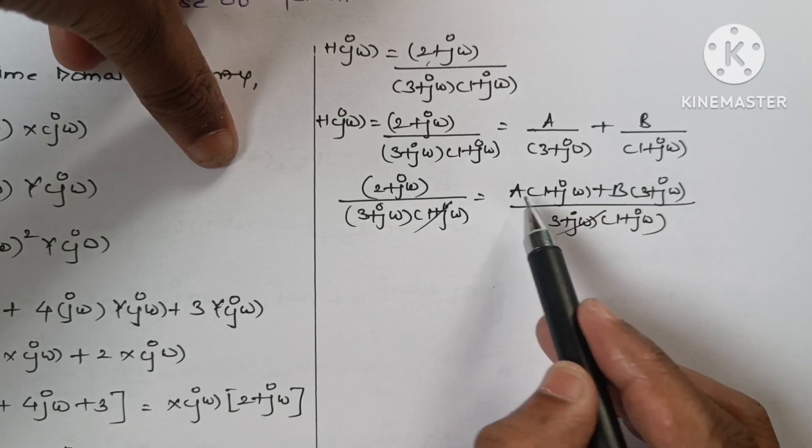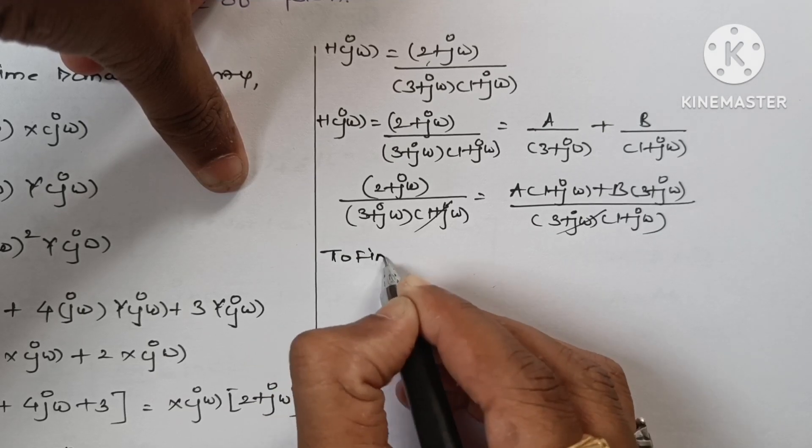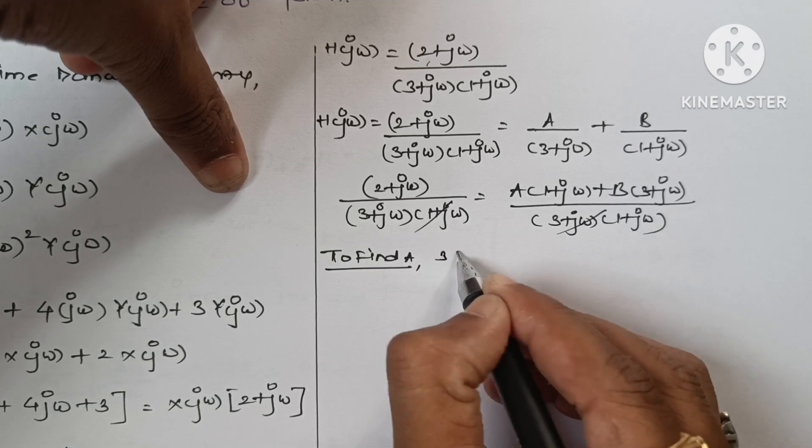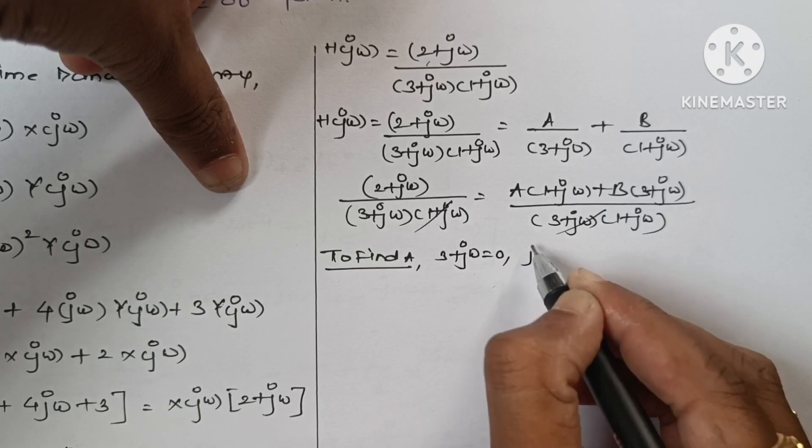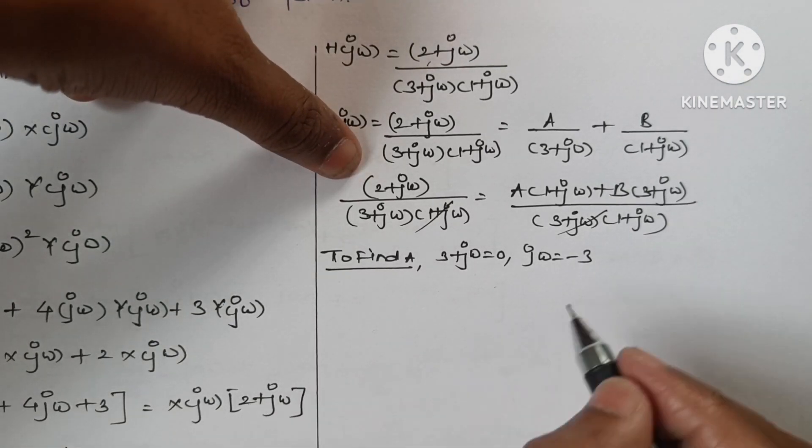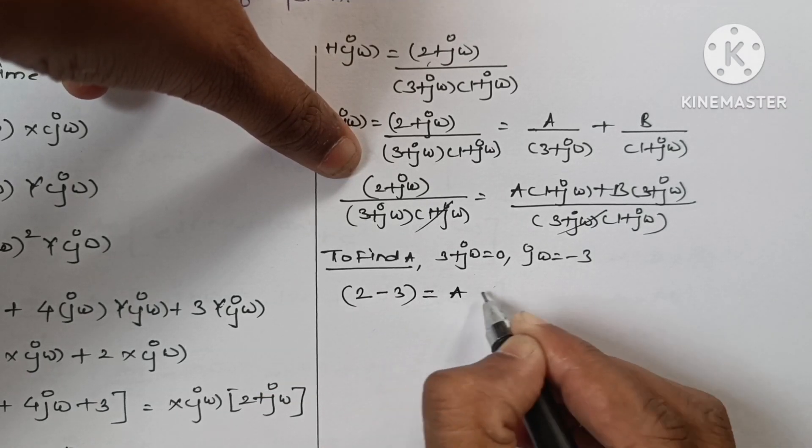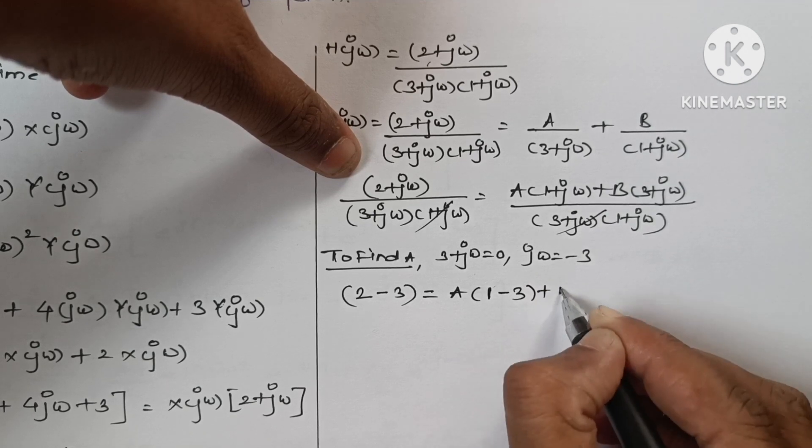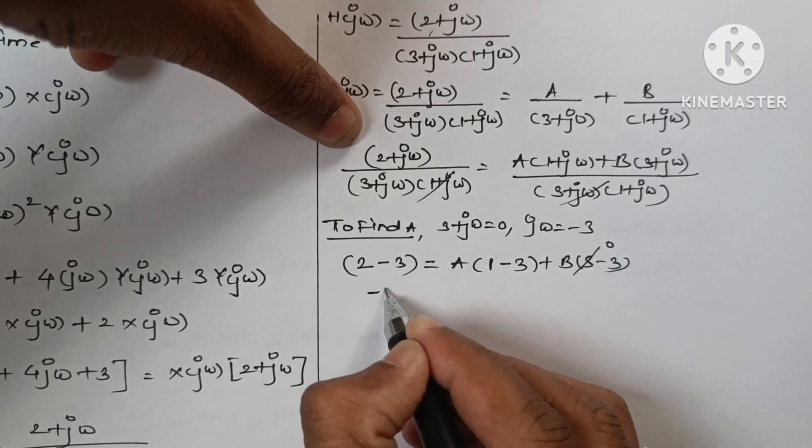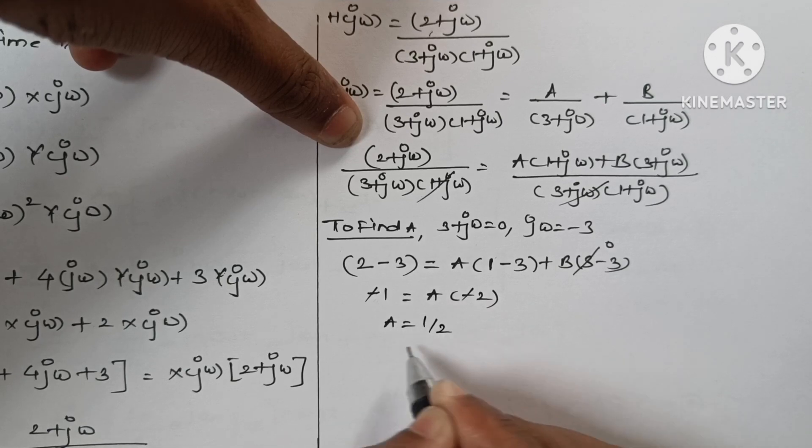To find a, we set 3 + jω = 0, so jω = -3. Substituting in the equation: 2 - 3 = a(1 - 3) + b(0). This gives -1 = -2a, so a = 1/2.